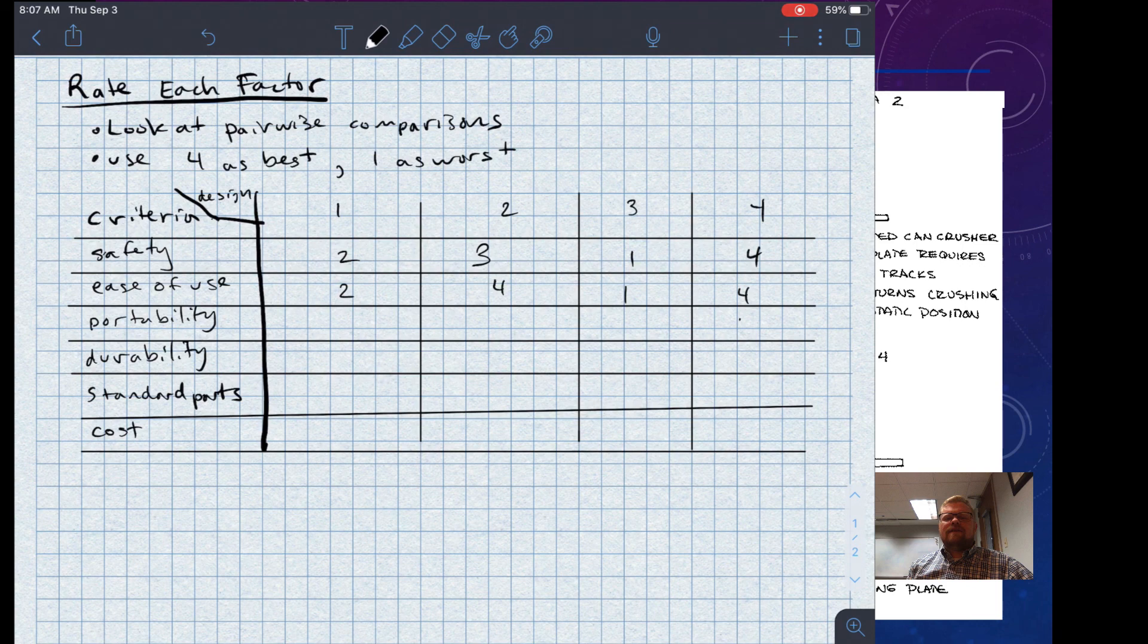For portability, the least portable one sure seems like design idea three. I would go with design idea two, because the way that it's drawn here, it sure looks like a larger contraption. Design idea one might be the second most portable. Again, I'm sort of just using intuition. If I were standing in front of a classroom right now, I would be asking for their opinions. And let's say that maybe design idea four is the most portable.